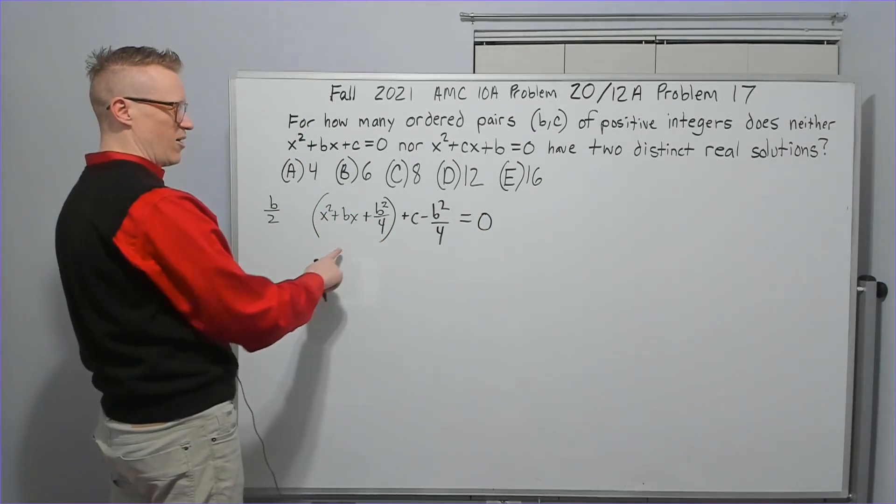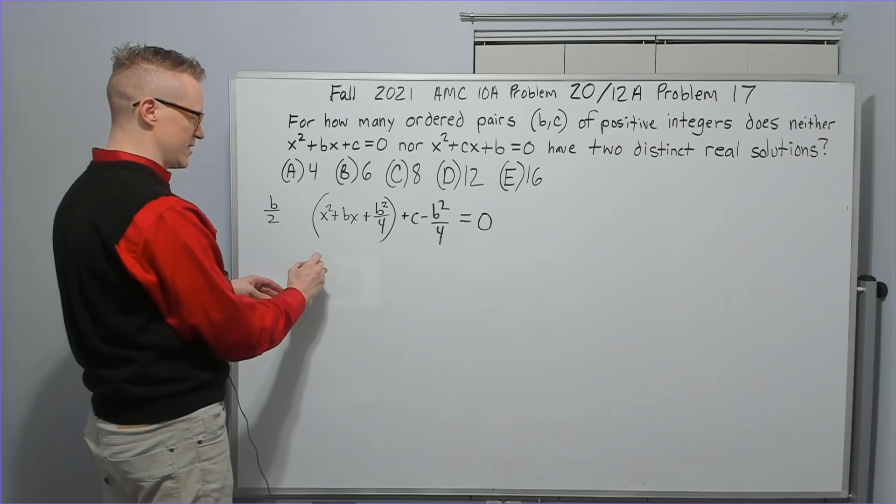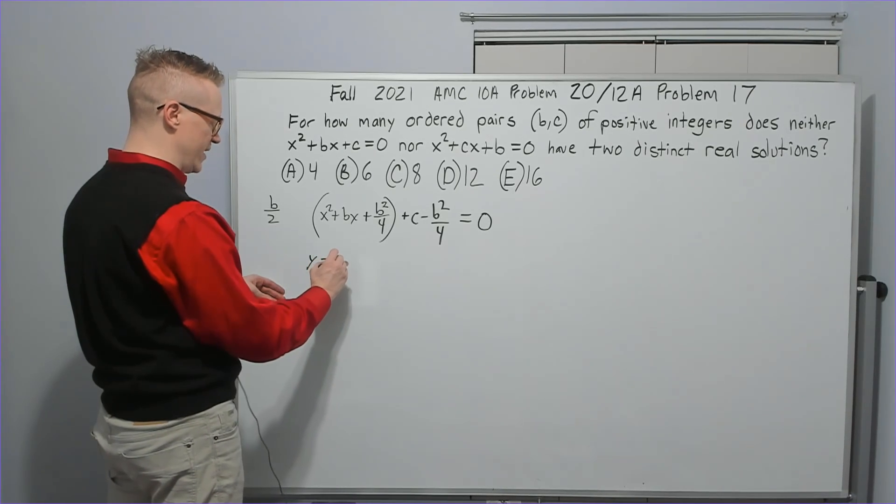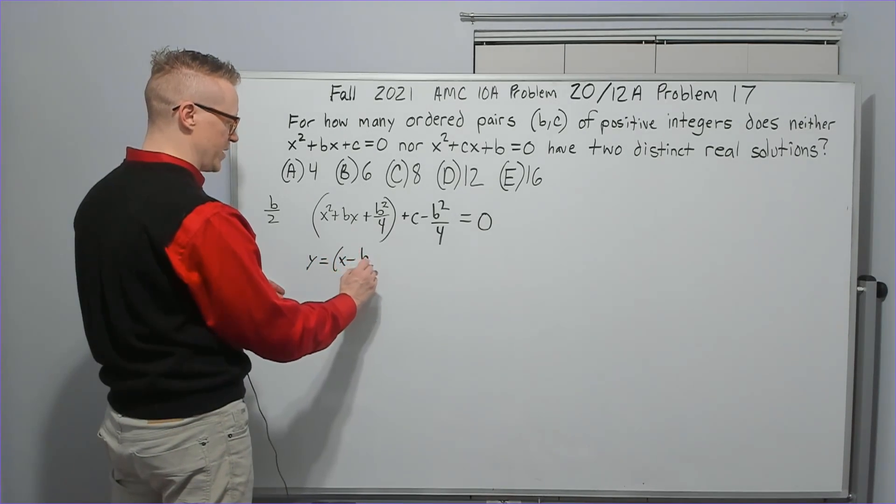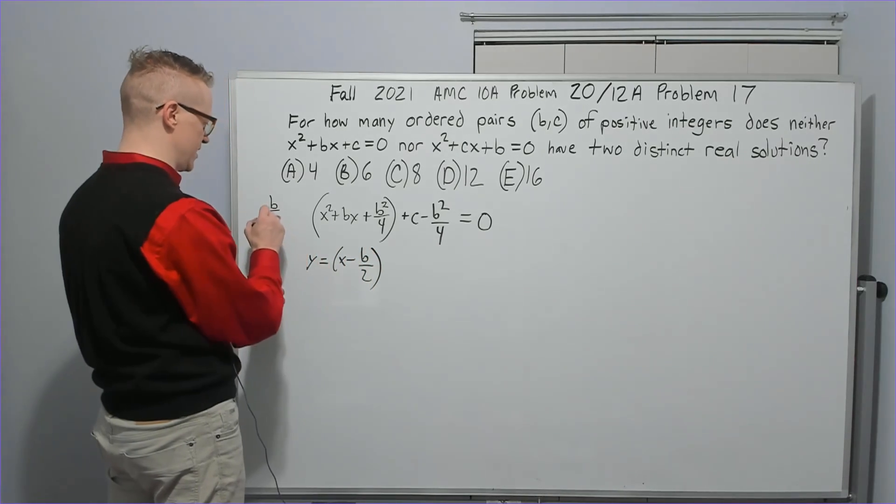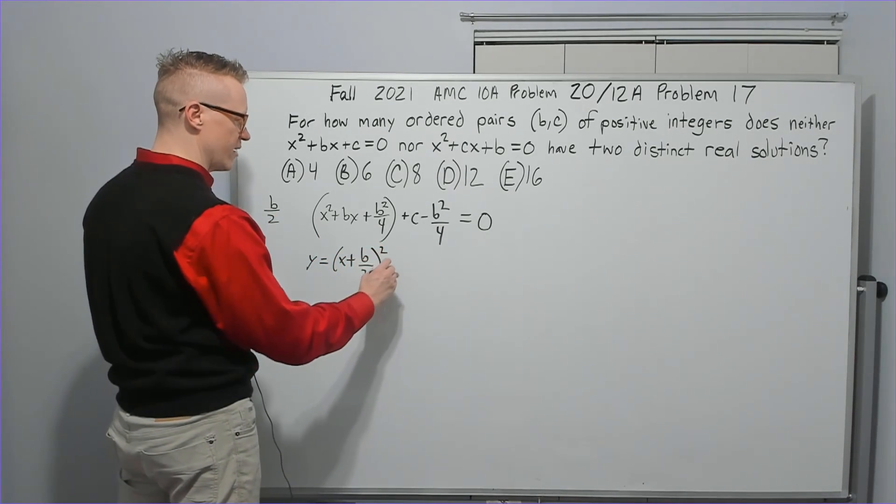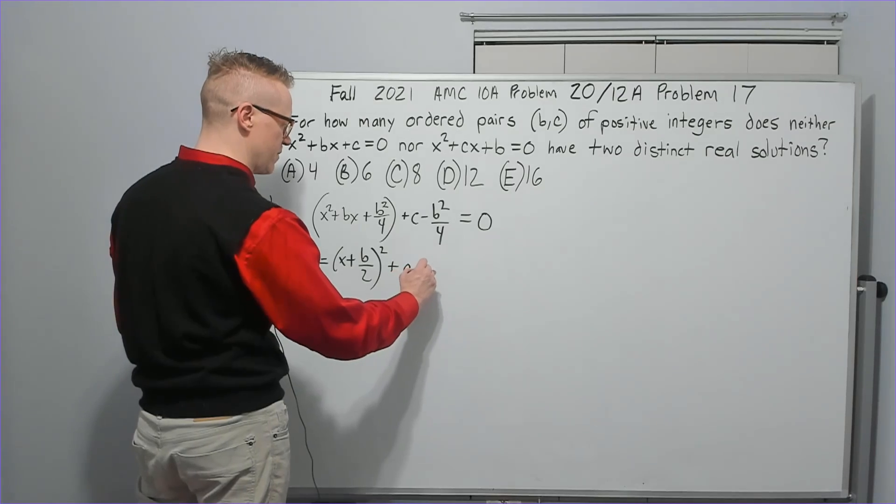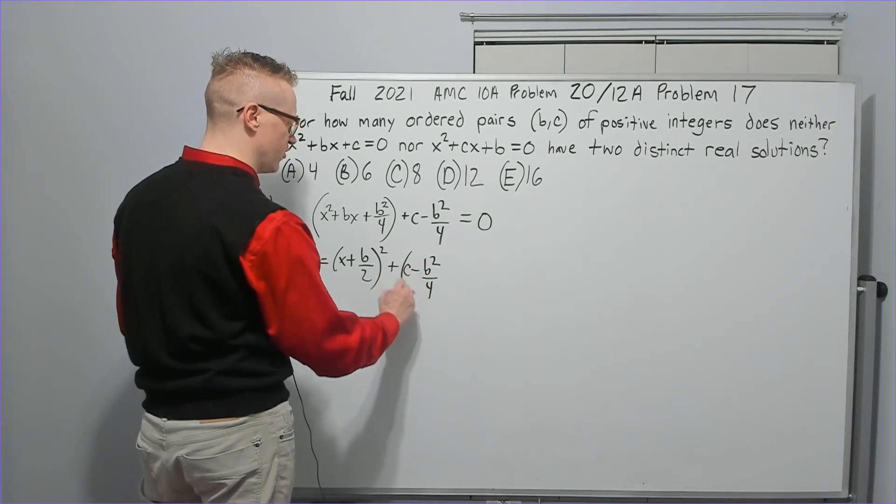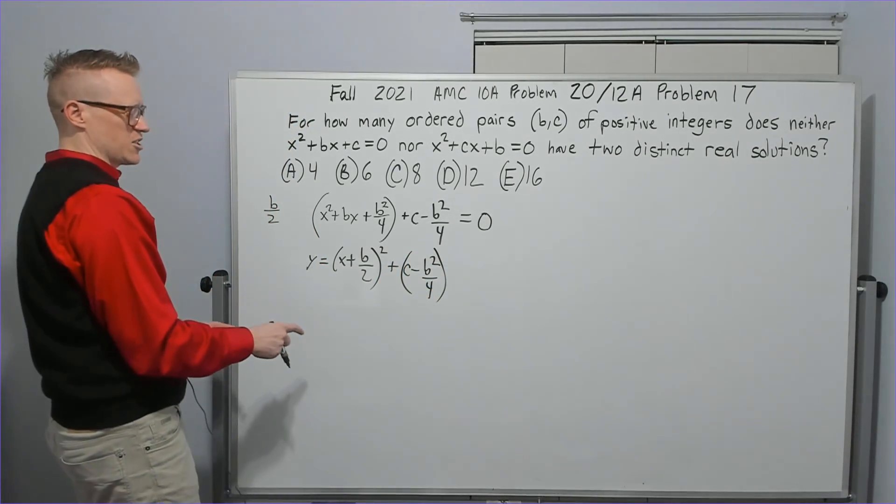Okay, so if you think of this like a parabola, right, this is like if I factor it, y equals x minus b over 2, or plus b over 2, squared, plus c minus b squared over 4.